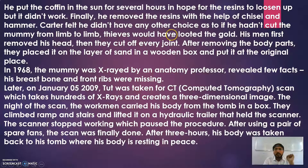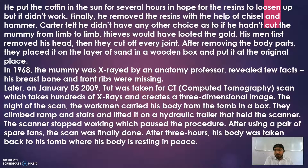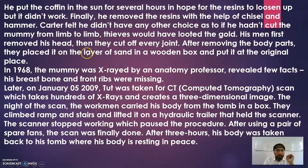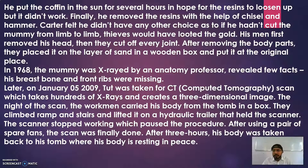Carter felt he had no other choice: if he hadn't cut the mummy limb from limb, thieves would have looted the gold. So he cut the mummy from joint to joint — the head separately, the chest portion separately, the arms separately — chiseling away the resins and taking out the mummy from the tomb. His men first removed the head, then cut off every joint. After removing the body parts, they placed them on a layer of sand in a wooden box and put it back in the original place.